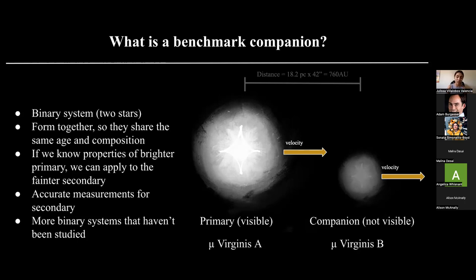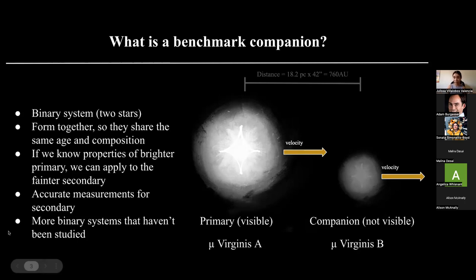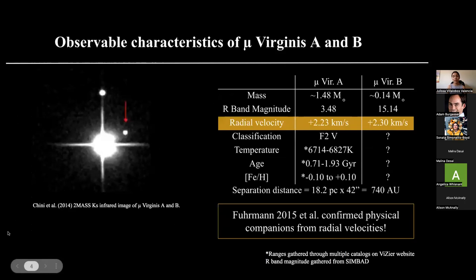If we have accurate measurements for Mu Virginis B — an ultracool dwarf that we cannot see very well — then we have the ability to also categorize and characterize other ultracool dwarfs in the universe that may not have a primary star that we can study. There are multiple binary systems out there that have not been studied.